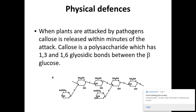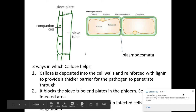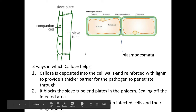For physical defences, when plants are attacked they release something called callose. You don't need to know its structure — this diagram just shows you what it looks like. There are three ways in which callose deposition can help the plant. First, callose can be deposited within the cell walls themselves to reinforce them with lignin. This provides a thicker barrier for the pathogen to penetrate through, making it more difficult.